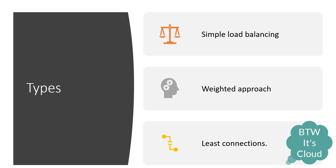There are three types of load balancing techniques available in Nginx. The first one is simple load balancing. Suppose you have four servers — the requests follow a round robin mechanism. The first request goes to the first server, the second request to the second server, then the third and fourth server. No complex logic required, just round robin.